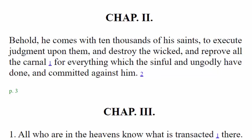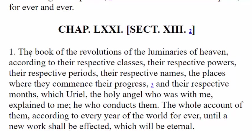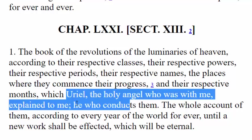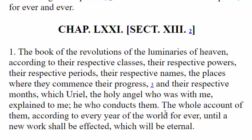Back in chapter 71 — the beginning of the Book of the Revolutions of the Luminaries of Heaven — we see their respective classes, powers, periods, names, the places where they commence their progress, and their respective months, which Uriel the holy angel explained to Enoch. That's Enoch explaining the source of his information — he wasn't just making stuff up or writing based on his own observation. He was actually taught by Uriel, who is in charge of conducting the luminaries.